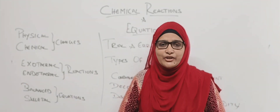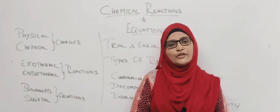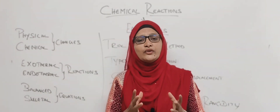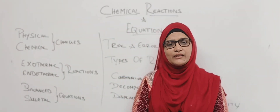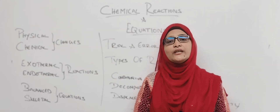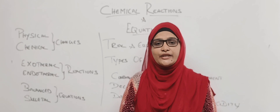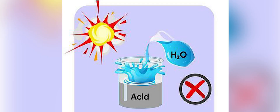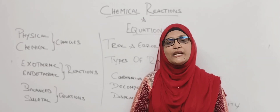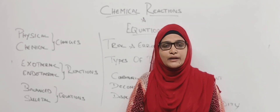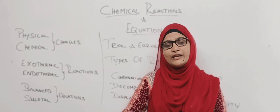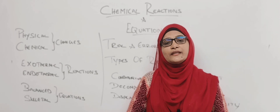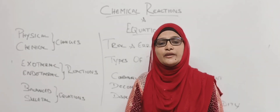We can also mention exothermic and endothermic reactions in chemical equations. In an exothermic reaction, heat is produced. For example, mixing water into acid is an exothermic reaction. At the same time, if heat is absorbed, it is an endothermic reaction. 'Endo' means heat goes in; 'exo' means heat is given out.